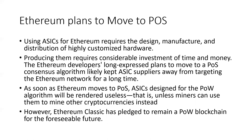For a long time, Ethereum developers targeting a proof of stake transition had kept ASIC miners away from Ethereum. However, as soon as Ethereum moves to proof of stake, ASICs designed for the proof of work algorithm would essentially be rendered useless — unless those ASICs can be used to mine other cryptocurrencies. That latter possibility is a reality, considering there are other Ethash-based consensus coins available, such as Ethereum Classic and other currencies.